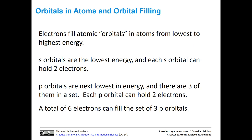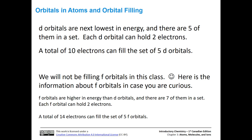Each p orbital can hold two electrons, and there are three of them, so we can put six electrons total into those p orbitals. D orbitals are higher in energy than both s and p. There are five d orbitals in one set, and since each orbital can hold two electrons, five times two is ten — we can put ten electrons in that set of five d orbitals.